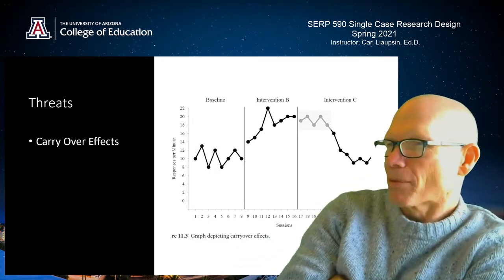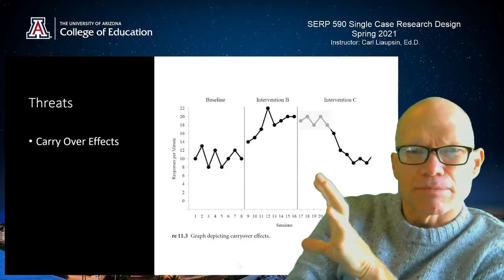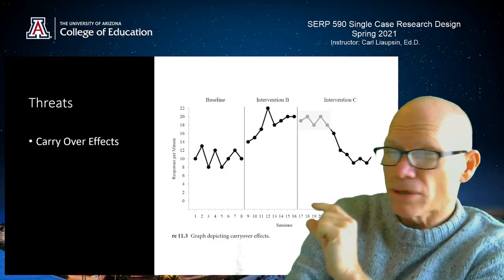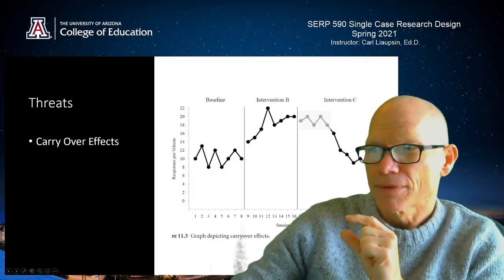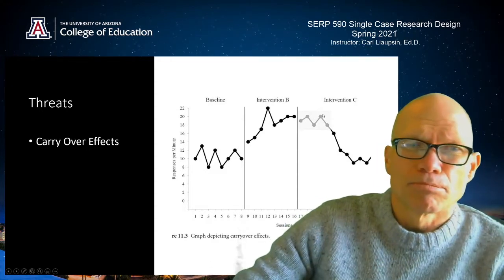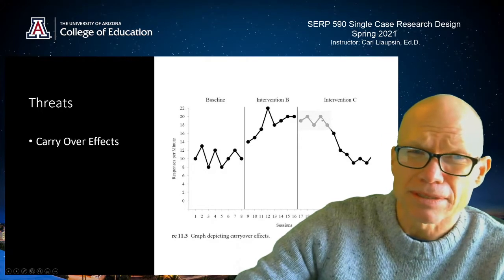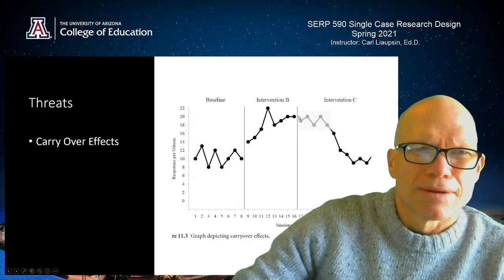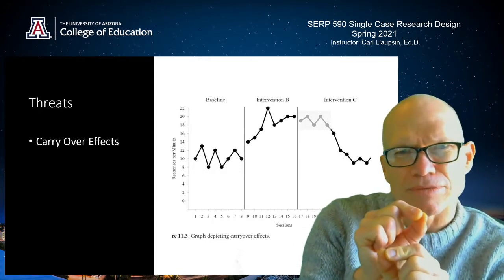So why are there so many problems with trying to do comparison designs? In a multi-treatment design, you have one intervention followed by another. What can happen is something called a carryover effect — you implement intervention B, then start intervention C, but clients are still reacting to what they learned in intervention B. So intervention C seems to work at first, but then doesn't work as well because they're no longer getting elements from intervention B, giving you distorted data.